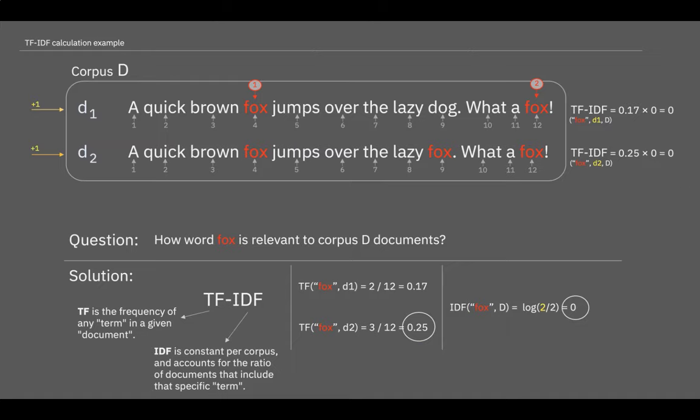Now we have calculated TF-IDF for all documents in our corpus. And that means that now we can answer the main question in this task: How is the word fox relevant to corpus D documents?